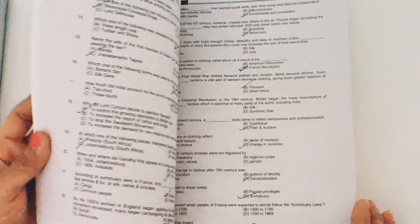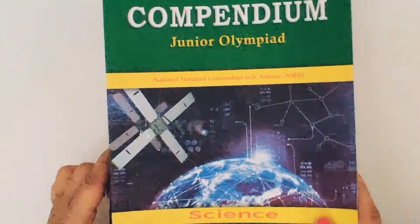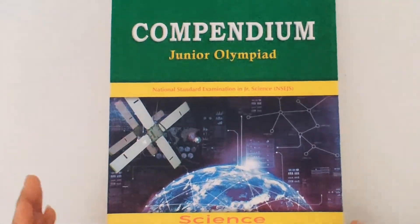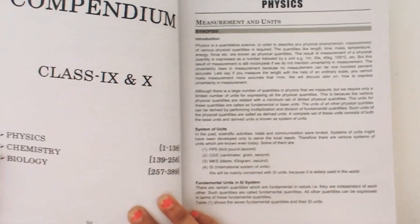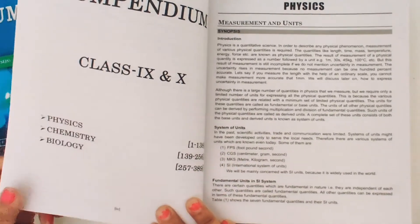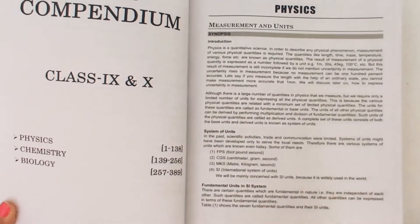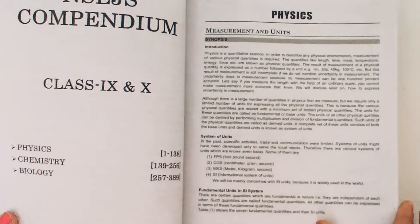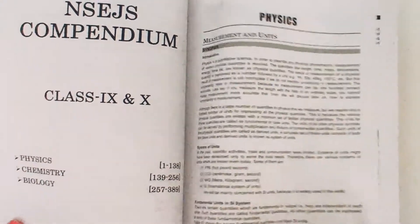This follows for each chapter and the level is very nice. Now this is the fourth compendium which is for NSEJS science part. It contains physics, chemistry and biology sections and is very helpful for class 9th and 10th both, and even includes some class 11 topics.